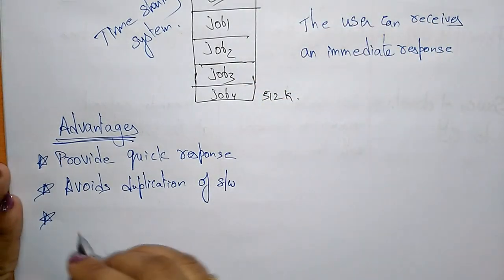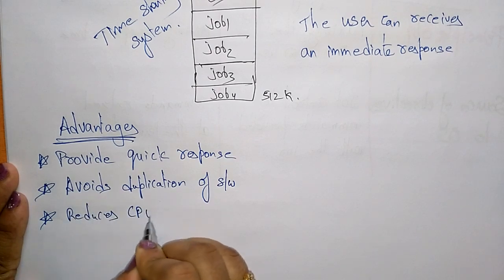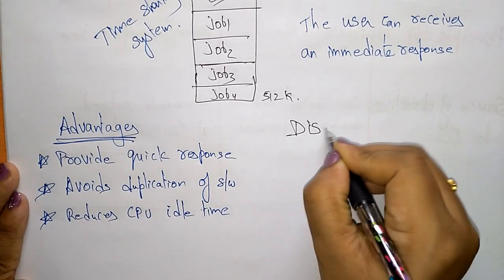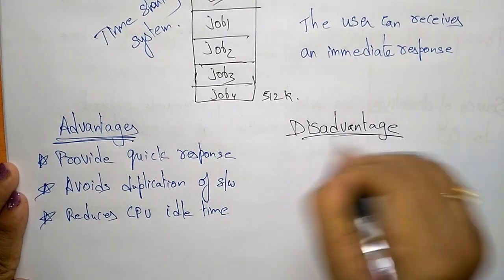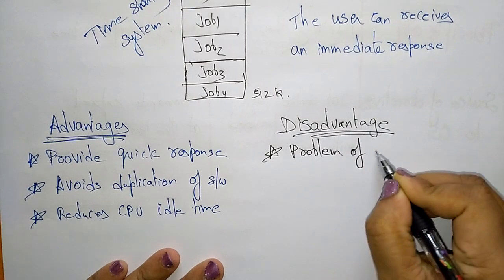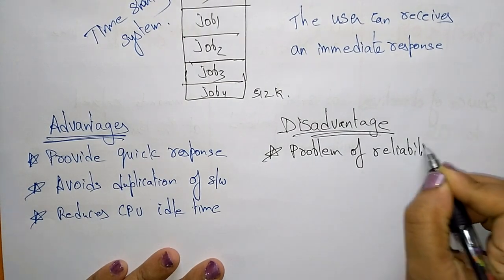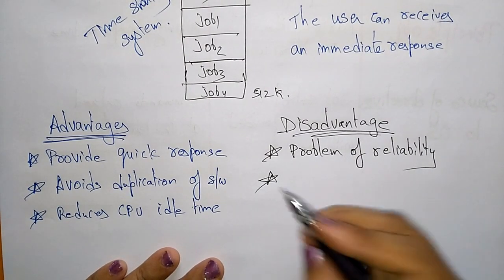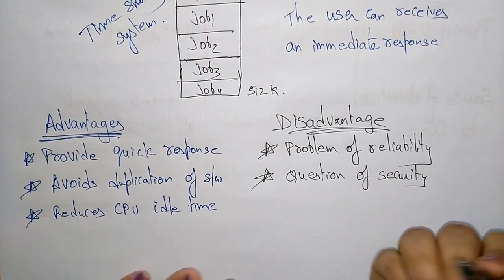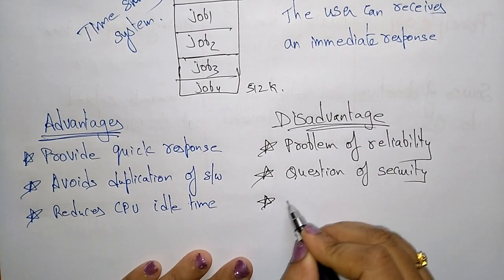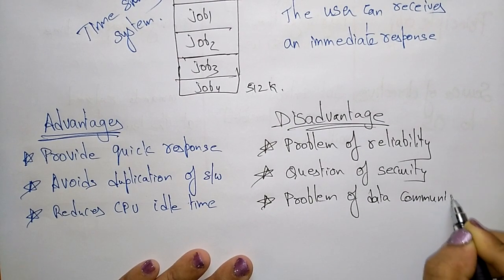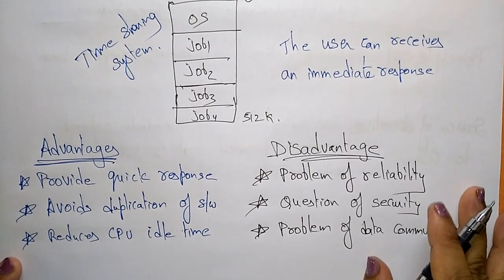Now coming to the disadvantages of using a time sharing system. First is the problem of reliability. Second, questions of security arise — security and integrity of user programs and data. Third, there may be a problem of data communication. This is about the time sharing operating system. Thank you.